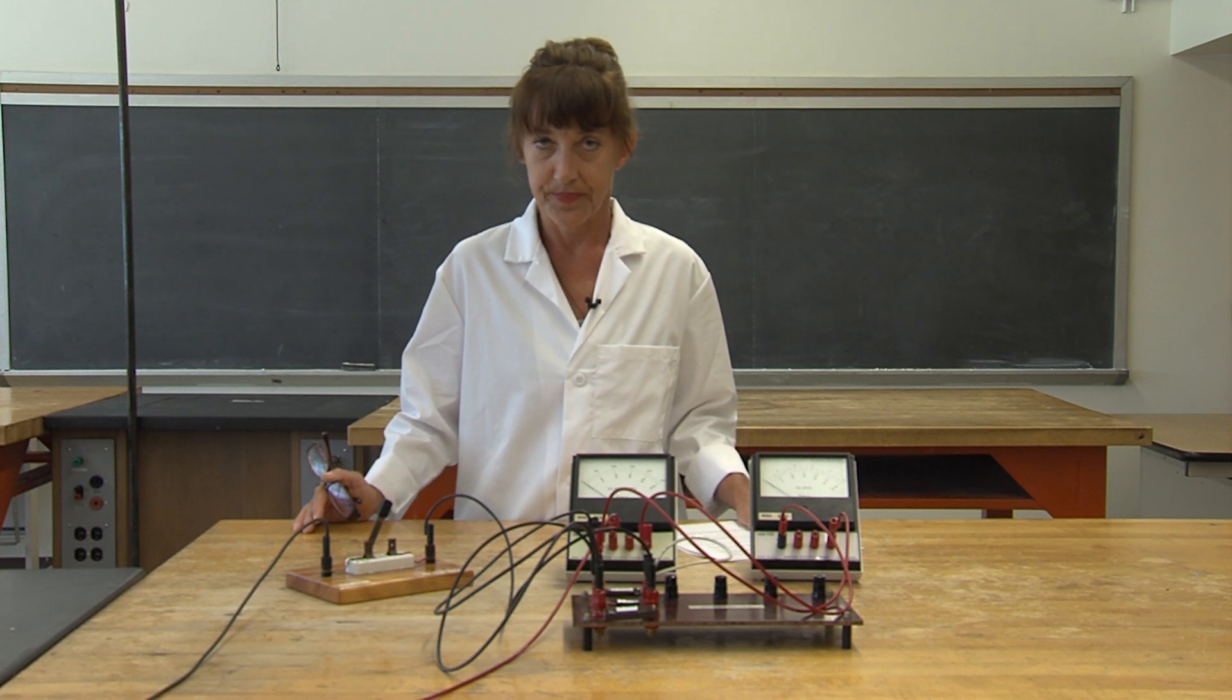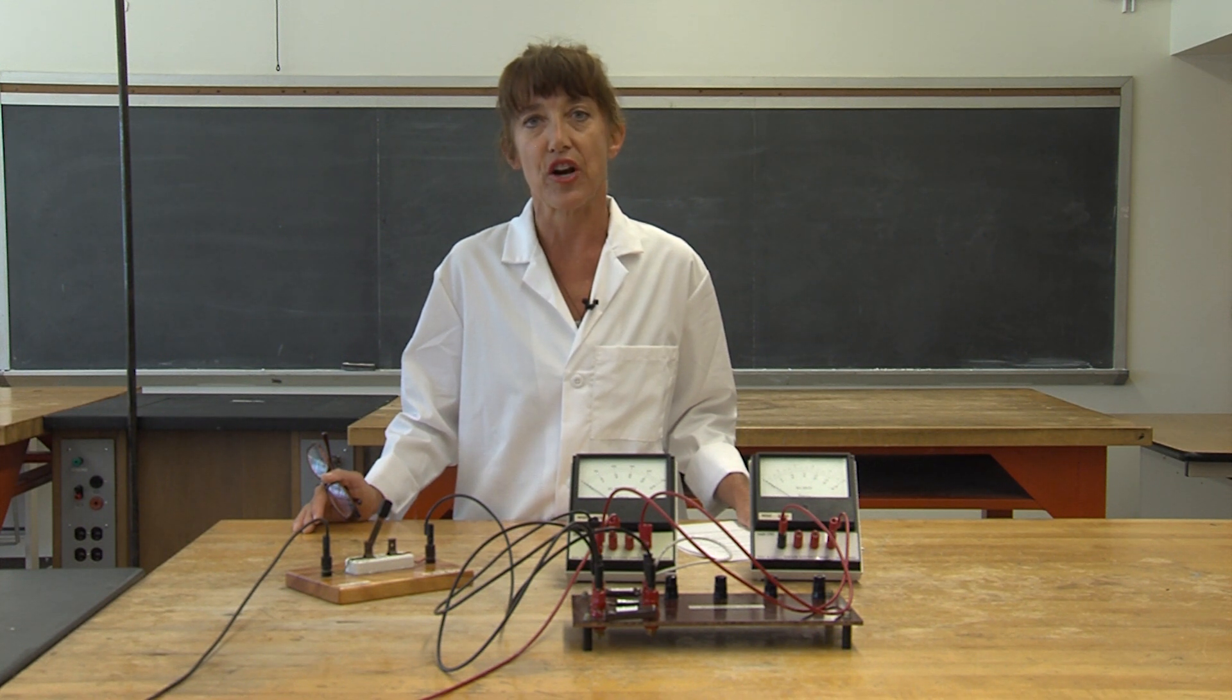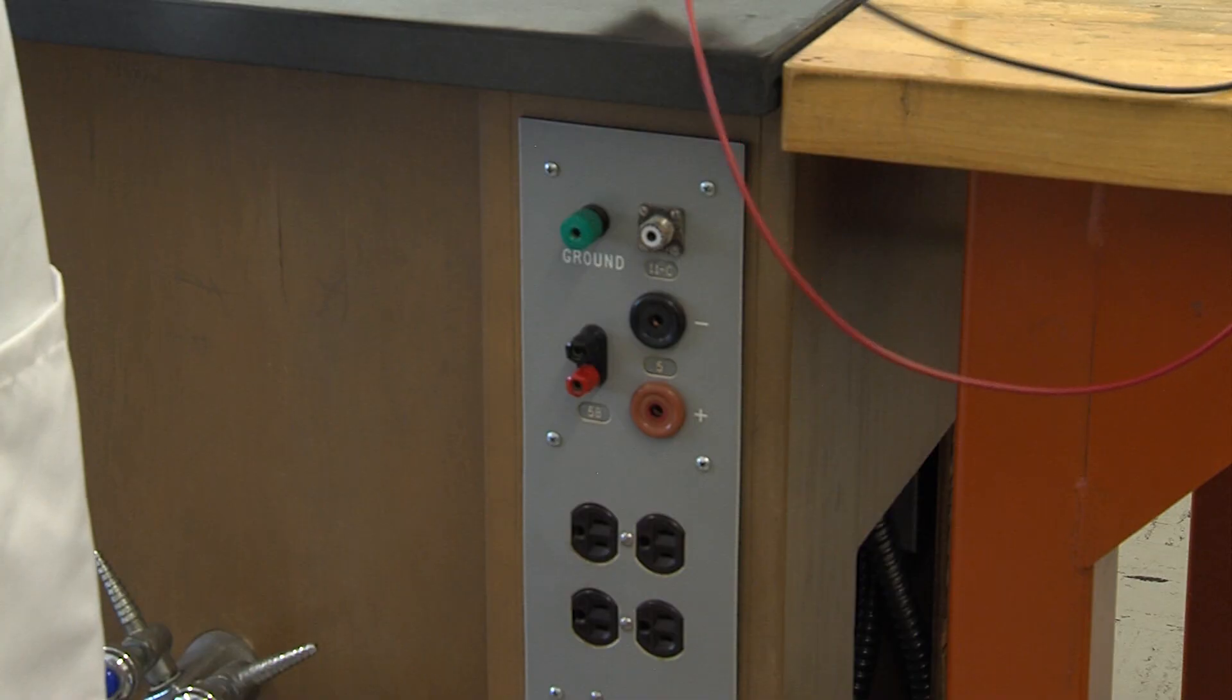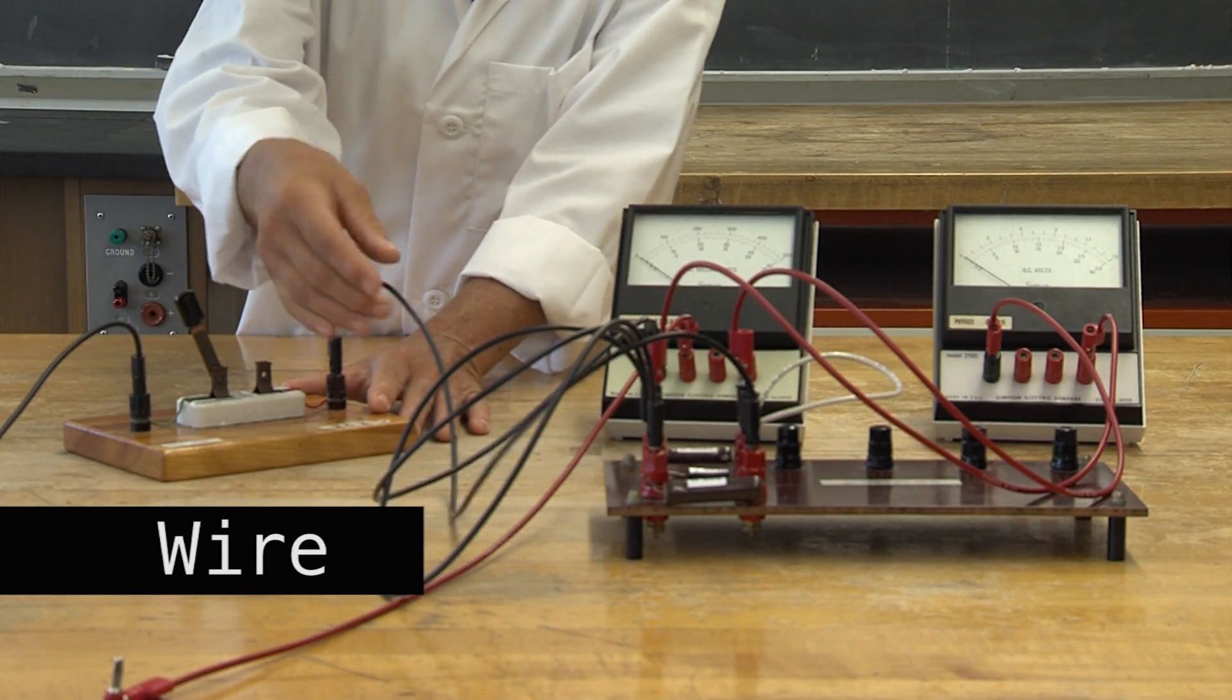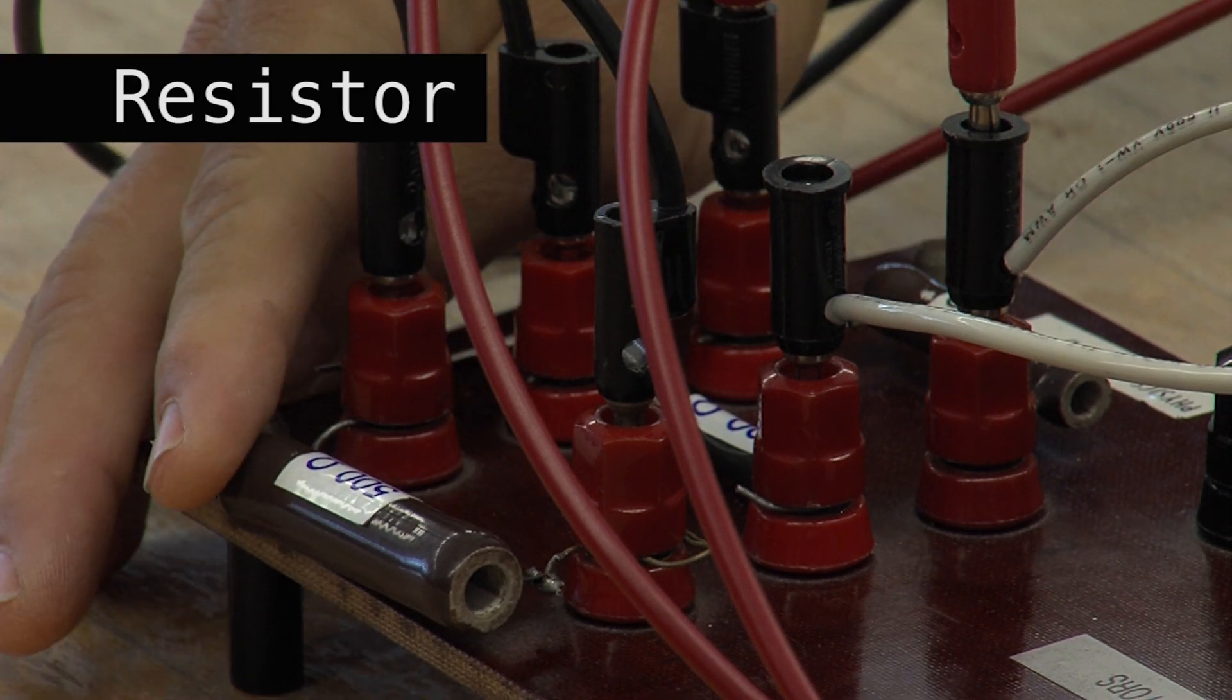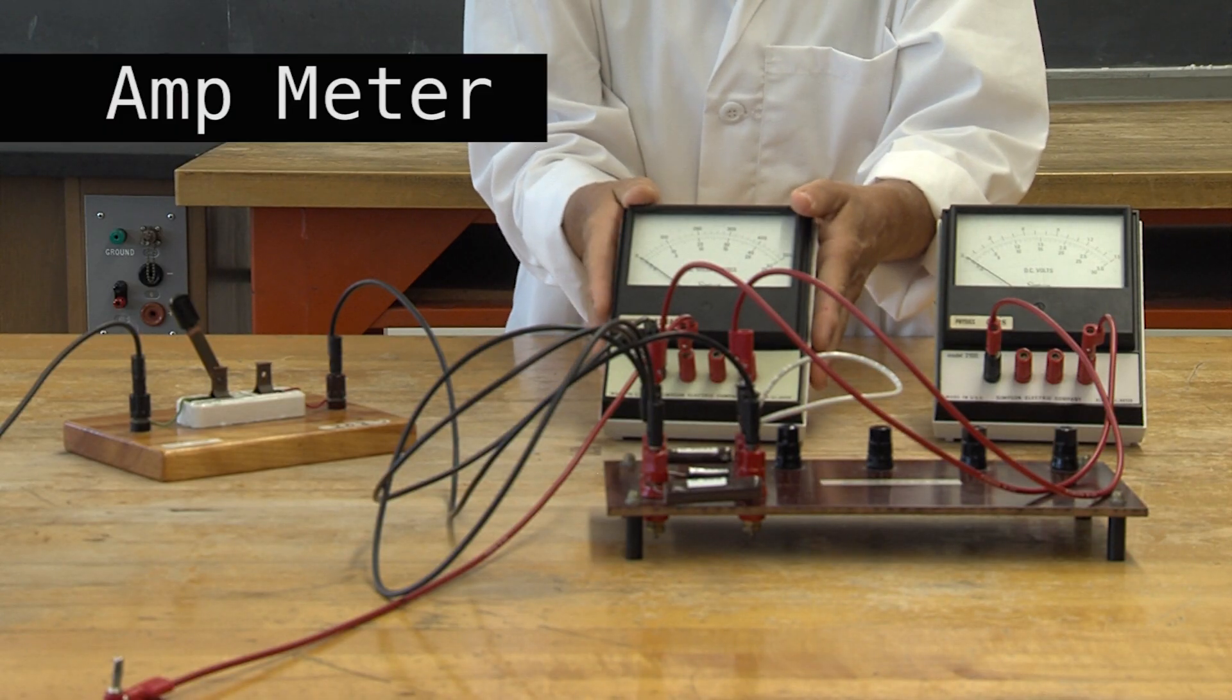Now let's talk about circuits. Electronic circuit diagrams use symbols to represent their various components. You will be using the following symbols today: battery, wire, switch, resistor, voltmeter, and ampmeter.